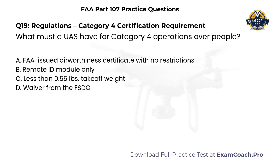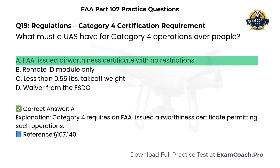Regulations. Category 4. Certification requirement. What must a UAS have for Category 4 operations over people? A. FAA-issued airworthiness certificate with no restrictions. B. Remote ID module only. C. Less than 0.55 pounds takeoff weight. D. Waiver from the FSDO. Correct answer: A. Category 4 requires an FAA-issued airworthiness certificate permitting such operations.